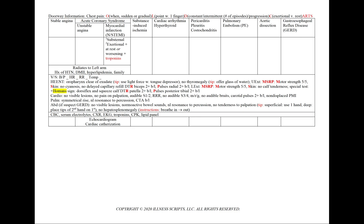In myocardial infarction, the patient will also have substernal chest pain that's exertional, at rest, or worsening, but now he'll have a positive troponin. On an OSCE, we are usually not given the troponins. Therefore, it will be safe to include both unstable angina and an MI for chest pain that's at rest or worsening. MI pain will also radiate to the left arm, with a history of hypertension, diabetes, hyperlipidemia, or family history. We will add an echocardiogram and cardiac catheterization.